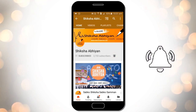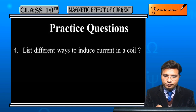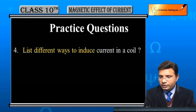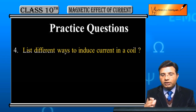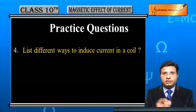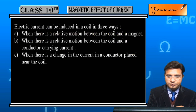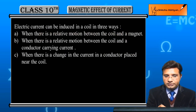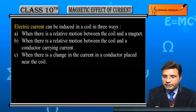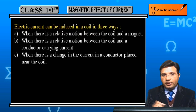Question number four: list different ways to induce current in a coil. A coil में current induce करने के क्या क्या तरीके हो सकते हैं? The answer is: electric current can be induced in a coil in three ways.